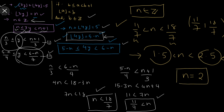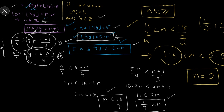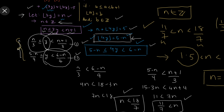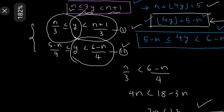Many people make the mistake of directly substituting n = 2 into floor(3y) = 2 and stopping there. But we still need the value of y. Instead, we substitute n = 2 into the two inequality equations: from the first, y ∈ [n/3, (n+1)/3) and from the second, y ∈ [(5−n)/4, (6−n)/4).